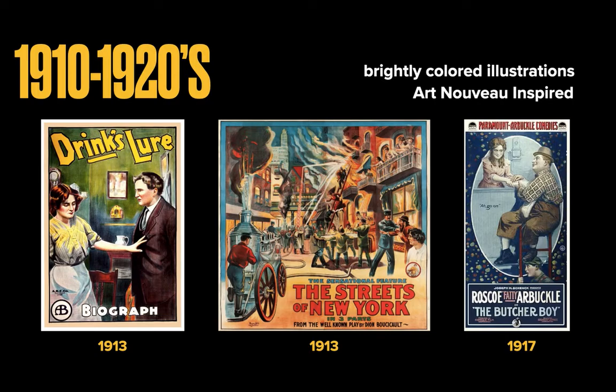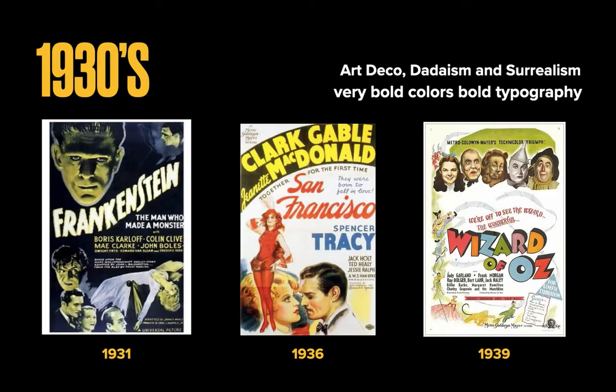In the 1930s, we have the golden age of movies. Posters were heavily influenced by Art Deco, Dadaism, and Surrealism, featuring geometric designs, bold colors, and bold typography. During this time, studios would often produce two movie posters for one film. The posters grew more illustration-focused, showing the main characters and a scene from the movie. Some notable movie posters from this era include 'Frankenstein,' 'San Francisco,' and 'The Wizard of Oz.'